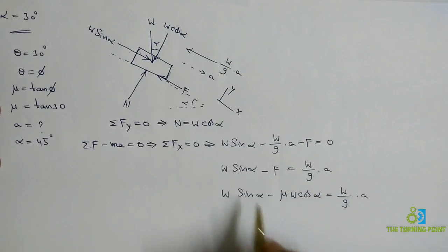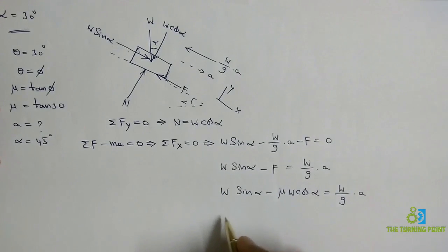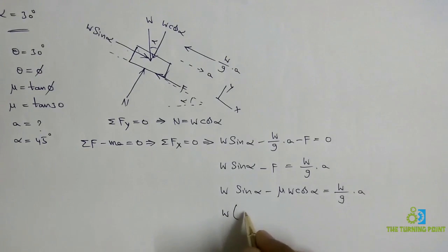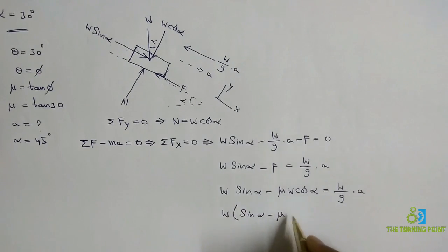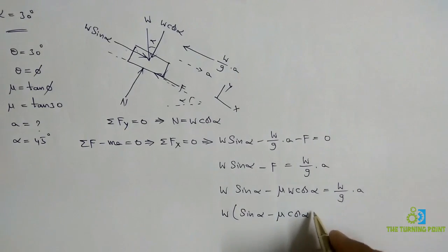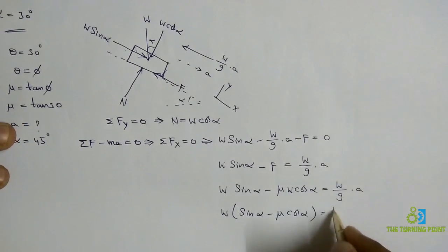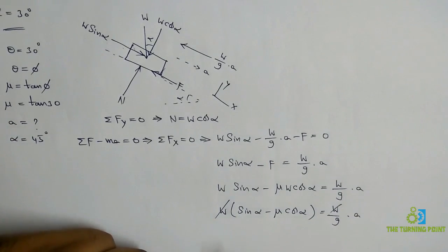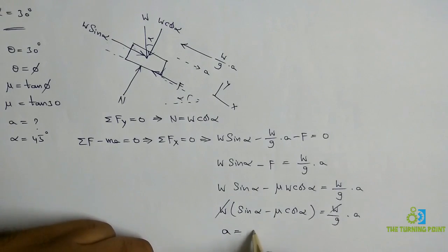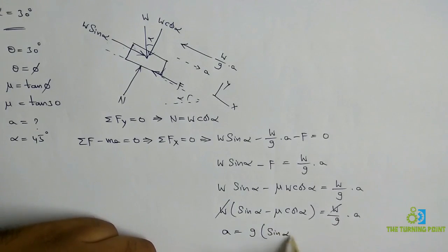Taking W common on both sides, W cancels out, giving the acceleration formula: a equals g times (sin alpha minus mu·cos alpha).